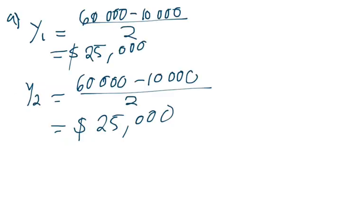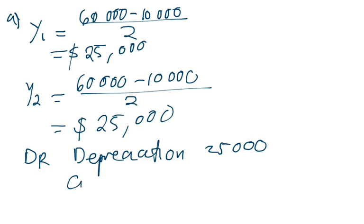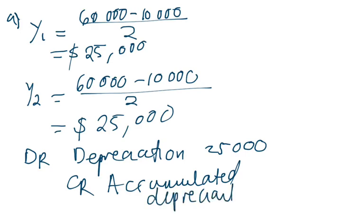How will we record depreciation in our books? Depreciation is an expense and expenses are debited. So we will debit Depreciation for the first year, $25,000, and then credit Accumulated Depreciation with the same $25,000.